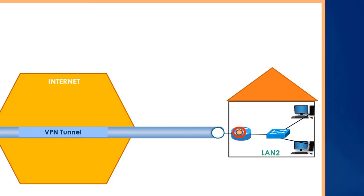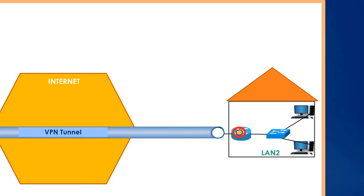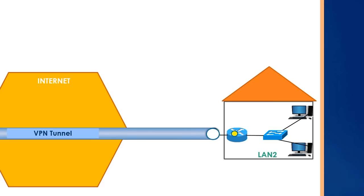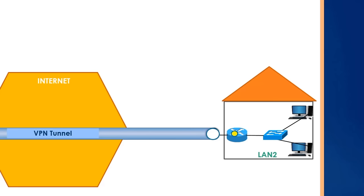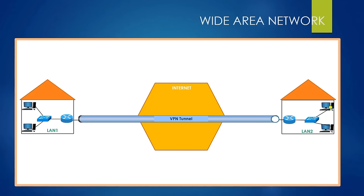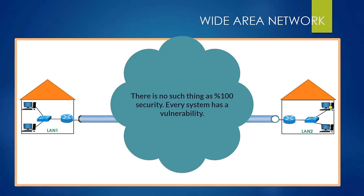The term 'tunneling' comes from here — because the packet is safe as if it was moving in your own private tunnel. The router needs to get the original packet: it first eliminates the outside packet, then decrypts the encrypted packet to obtain the original packet. After the router gets the original packet, it looks inside and learns its destination and sends the packet to its destination. As a result, with the help of WAN using VPN, we can securely share company-related information from one LAN to another.